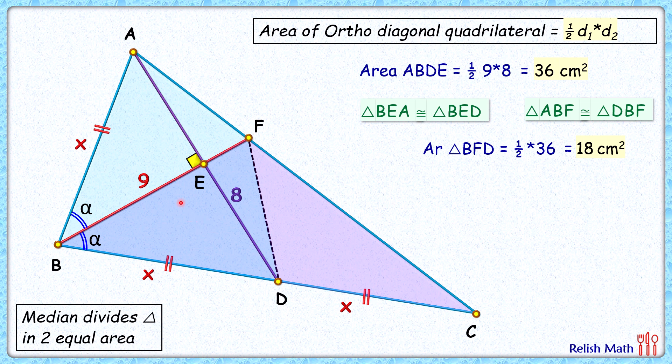So now the area of these two triangles is 18 cm² each, and FD is the median dividing it into two equal areas. So this pink triangle area, triangle FDC, is also 18. And the area of this complete triangle ABC will be the area of this quadrilateral, that's 36, plus the area of this triangle, that's 18.